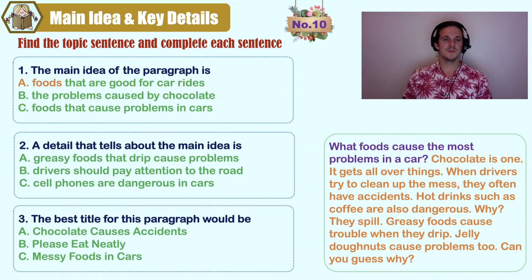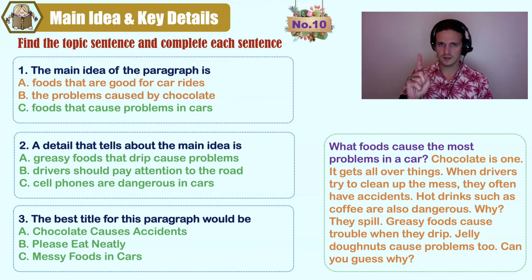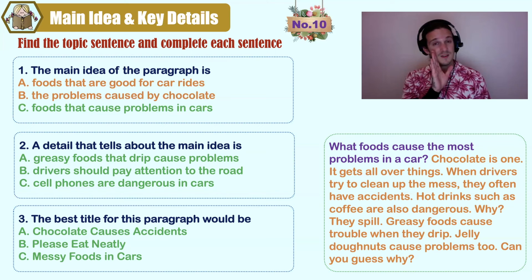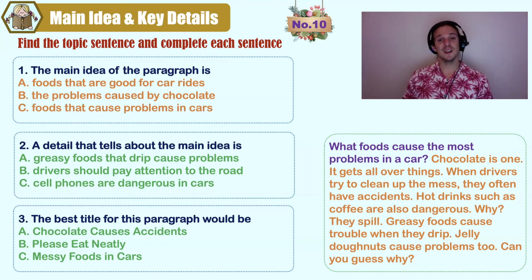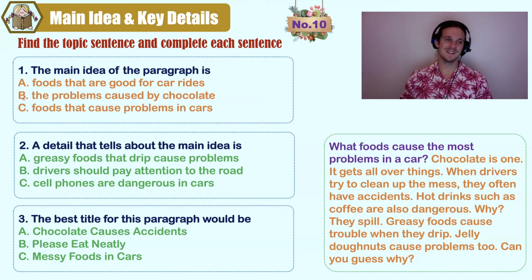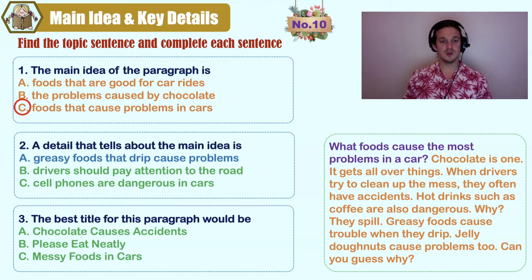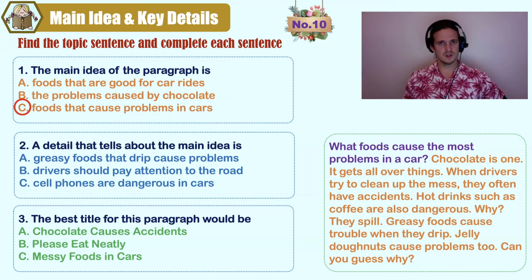What's the main idea? A) foods that are good for car rides, B) the problems caused by chocolate only — and by the way, it doesn't even talk only about cars — C) foods that cause problems in cars. Look at the topic sentence: 'What foods cause the most problems in a car?' The answer is C. What detail do you find? A) greasy foods that drip cause problems, B) drivers should pay attention to the road, C) cell phones are dangerous in cars. Are we talking about phones, driver safety, or food in cars? The answer is A.